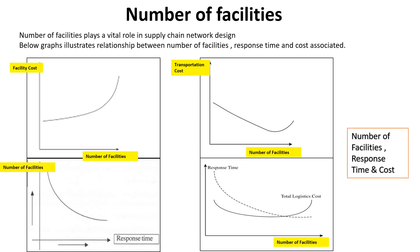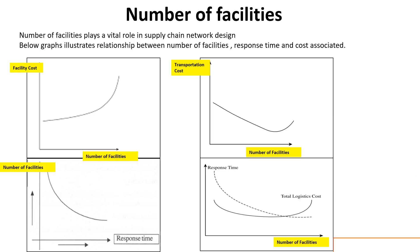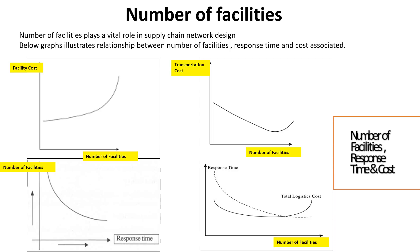Number of facilities plays a vital role in supply chain network design. The graph illustrates the relationship between number of facilities, response time, and cost associated. An increase in number of facilities will reduce response time but will ultimately increase total logistics cost. Total logistics cost is a sum of facility cost, inventory cost, transportation cost, and operating cost. So, it depends on your business strategy and market competition to decide the number of facilities.